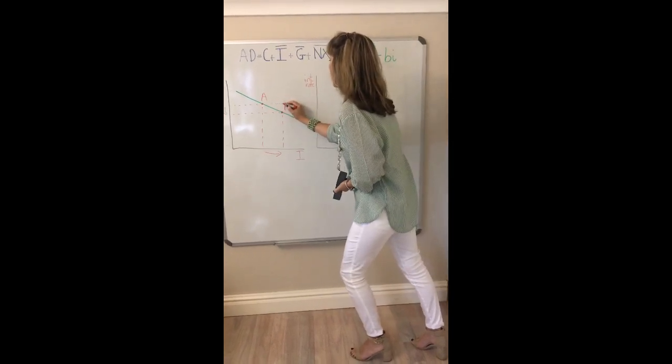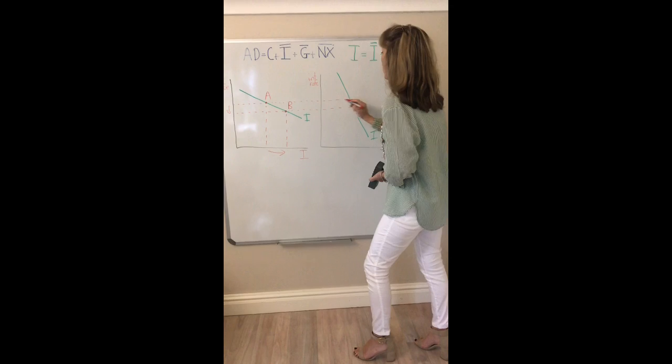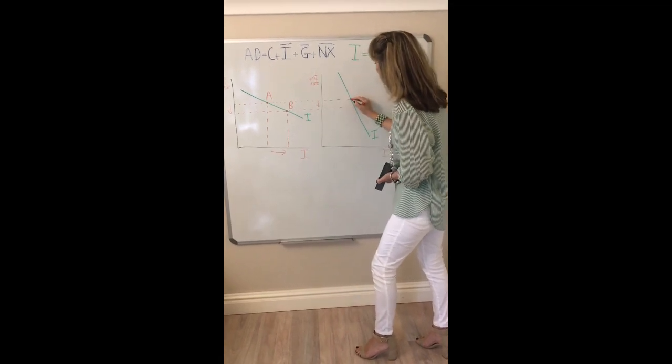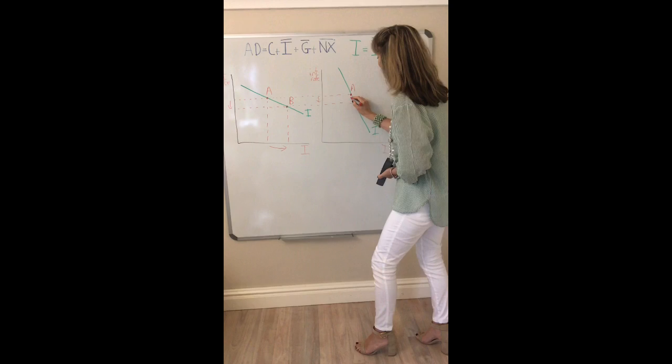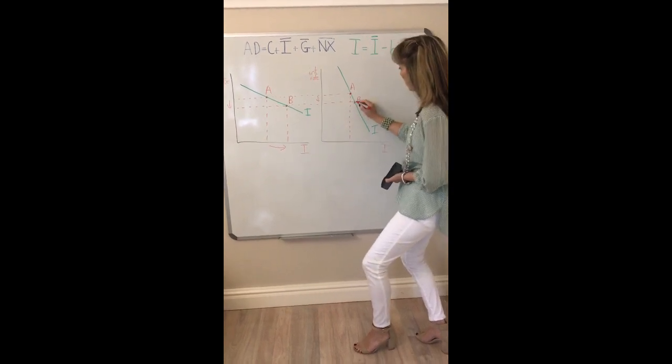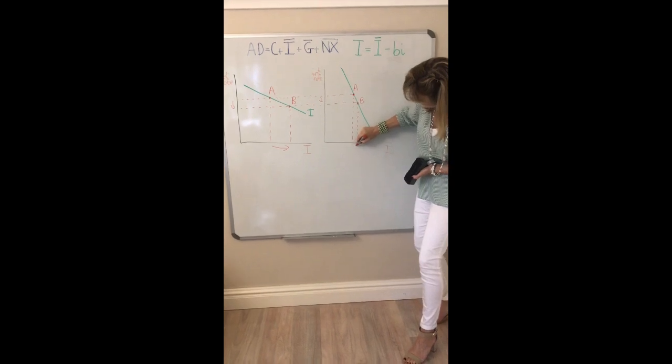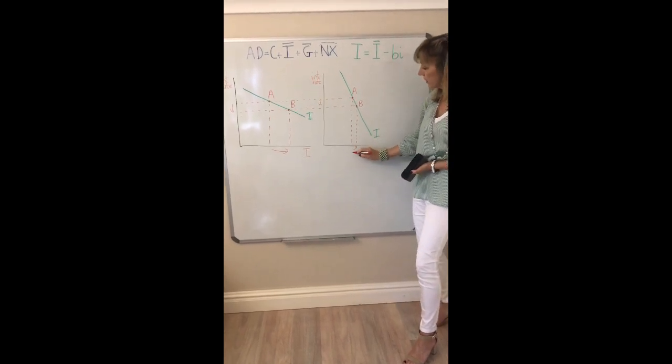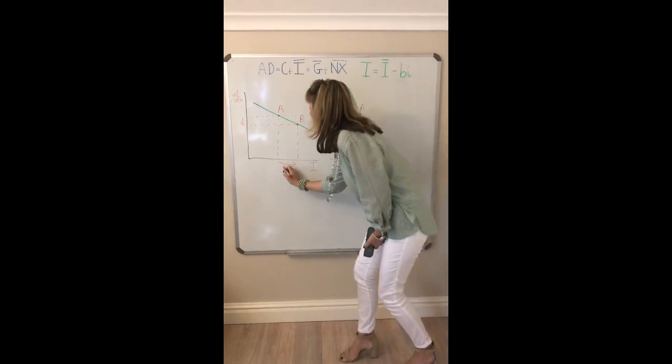So we're going to trace across the same change in interest rate. Say the interest rate falls by one percent and you move from point A to point B. What is the change in planned investment demand that occurs? It's going to rise again, but you can see that the change here is not very much compared to over here.